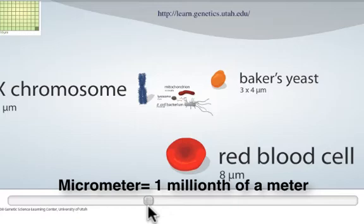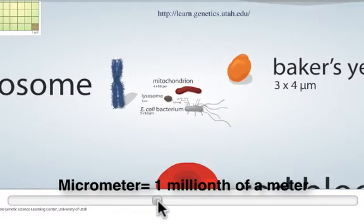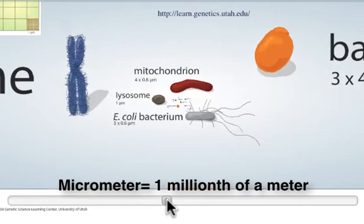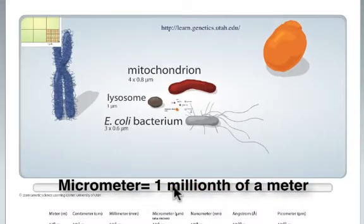A chromosome, seven micrometers. Here come the bacteria. E. coli, a common bacteria in your gut, three micrometers long.